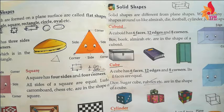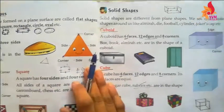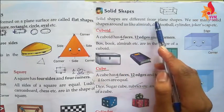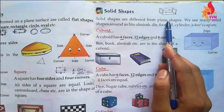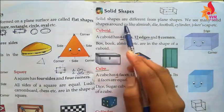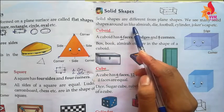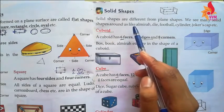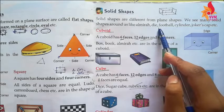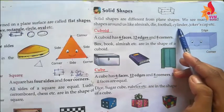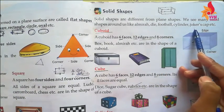Solid shapes are different from plain shapes. We see many solid shapes around us, like Almira, Die, Football, Cylinder, Joker's Cap or Birthday Cap.